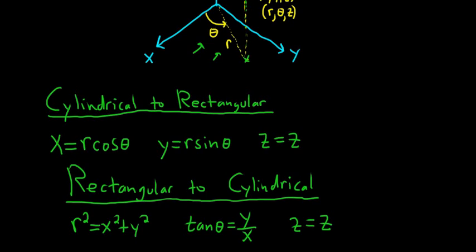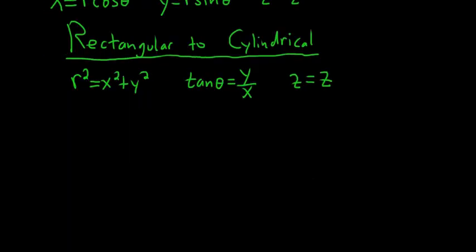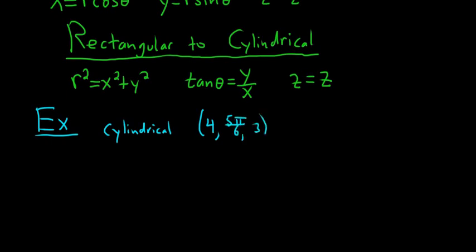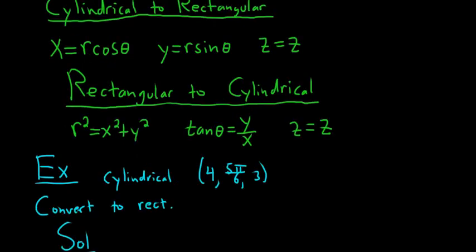Let's do a couple of examples — both directions. Example one: we're given a point in cylindrical coordinates: (4, 5π/6, 3). The question is to convert it to rectangular. So first, identify the variables: r = 4, θ = 5π/6, and z = 3.